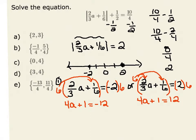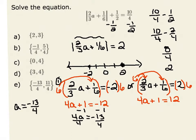Now I can solve each linear equation. In the first equation, 4a plus 1 equals negative 12; subtracting 1 from both sides gives 4a equals negative 13, and dividing by 4 gives a equals negative 13 fourths. In the second equation, 4a plus 1 equals 12; subtracting 1 gives 4a equals 11, and dividing by 4 gives a equals 11 fourths. Therefore, my two answers are a equals negative 13 fourths and a equals 11 fourths.